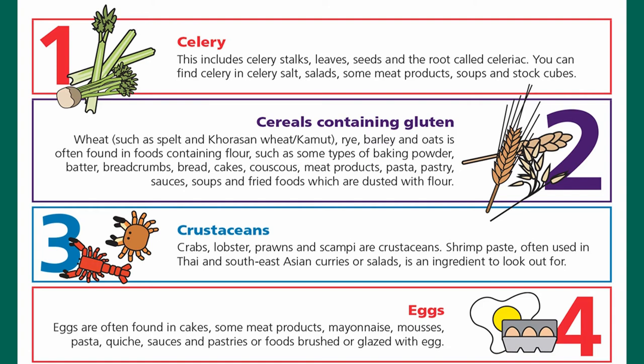Number two is cereals containing gluten — wheat such as spelt and khorasan wheat or kamut, rye, barley, and oats — often found in foods containing flour such as some types of baking powder, butter, breadcrumbs, bread, cakes, couscous, meat products, pasta, pastry, sauces, soups, and fried foods dusted with flour.